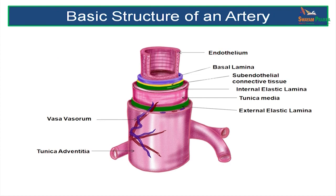Here we can see the basic structure of an artery. The innermost layer is an endothelium made up of a single layer of flattened or squamous cells resting on the basement membrane, also called the basal lamina. Outer to this is the subendothelial connective tissue, and still outer is the internal elastic lamina. These four layers — the endothelium, the basal lamina, the subendothelial connective tissue, and the internal elastic lamina — together form the tunica intima.